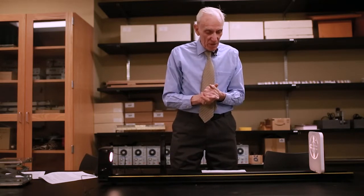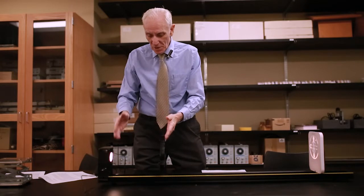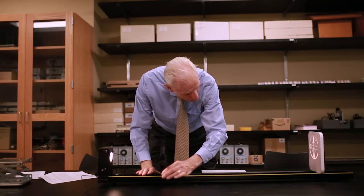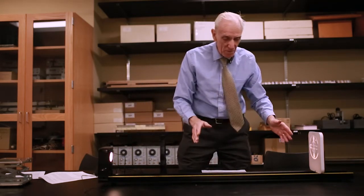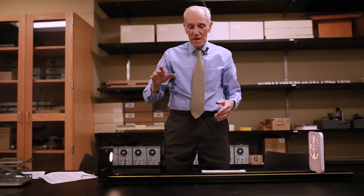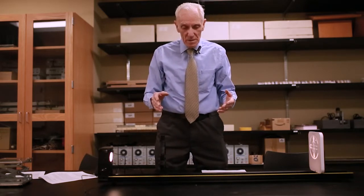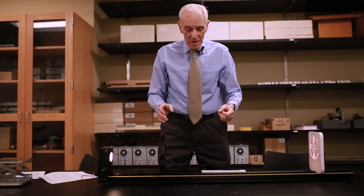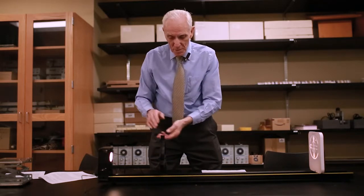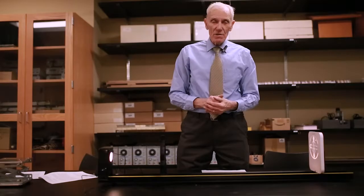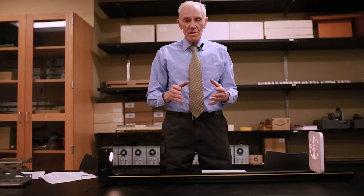That's how we do part two. Record the averages three times — refocus, check the readings P and Q, and average those values. Then calculate the magnification as H prime over H or Q over P. You can use the lens formula, 1 over F equals 1 over P plus 1 over Q, to find a more accurate value of the focal length.